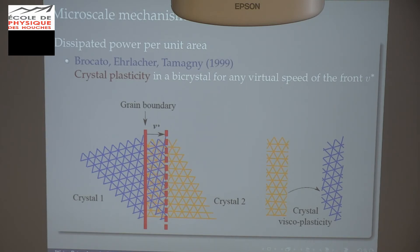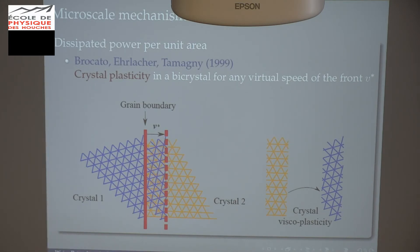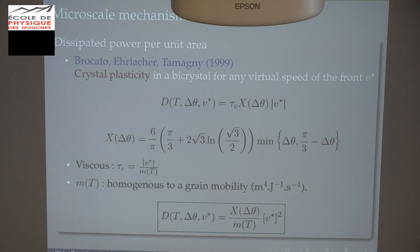I need a resistive part, because if there is no resistive part the grain just grows as fast as it can. The resistive part is the dissipation when the grain boundary moves at some speed — I need to compute the dissipated power when the grain boundary moves. The dissipative mechanism is crystal plasticity: when the grain boundary moves, I need to transform one crystal into another by activating some slip system to make the crystallographic turn. This computation was done analytically in 1999 by Brocato, Erlacher, and Tamanini, who obtained a very simple dissipated power as a function of crystal disorientation and grain boundary speed.